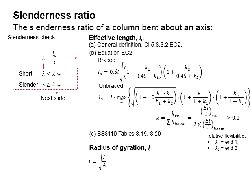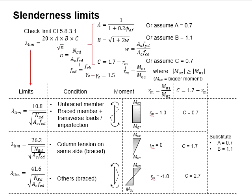To determine the slenderness of the column, the slenderness ratio is to be checked with the slenderness limit. The column is considered a short column when the slenderness ratio is less than the slenderness limit, whereas when it is equal or greater than the slenderness limit, then the column is considered slender. This slide shows the equations to check for the slenderness limit.